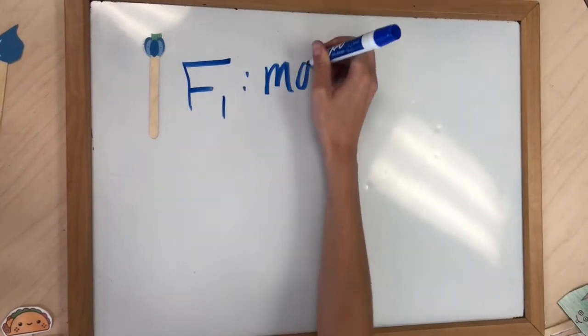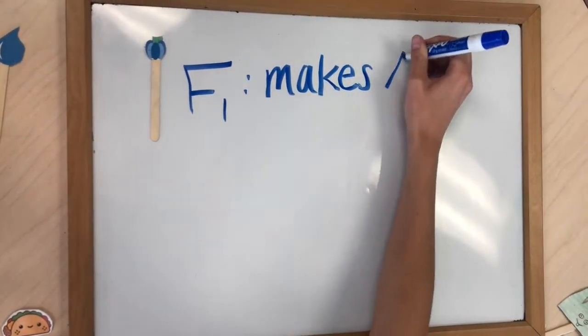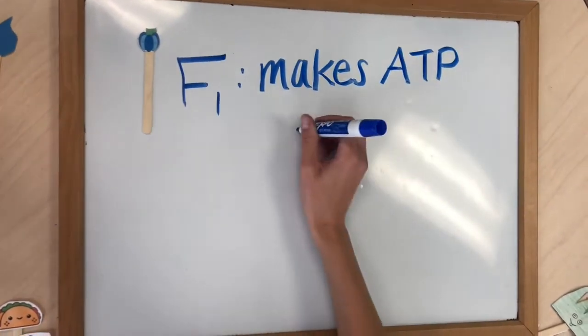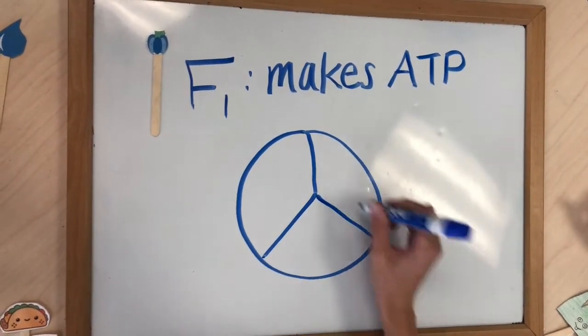The second domain we will discuss is F1. F1 has a rotational motor mechanism that helps it make ATP. There are three subunits that allow ATP to be bound and released.